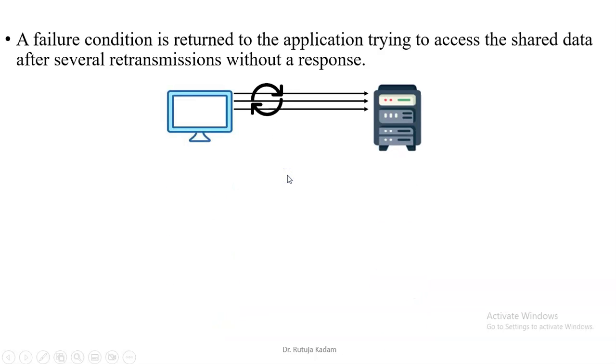The failure condition is returned to the application trying to access the shared data after several retransmissions without a response. Let's say the central server is not able to respond to the request. The client will retransmit the request frequently. Now after retransmitting, if the central server is still not able to send the reply and the client does not get the reply, then the central server returns to the application that it is a failure condition.